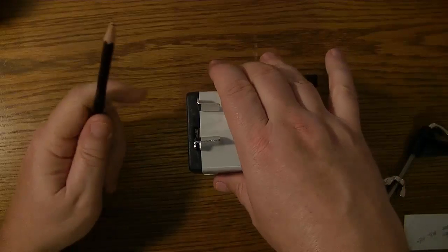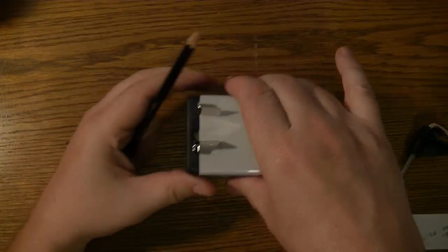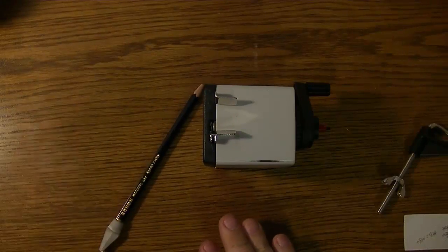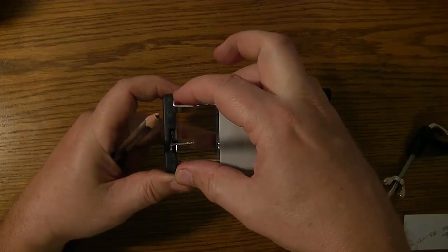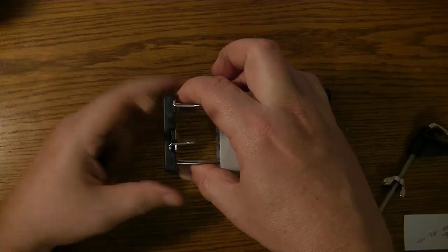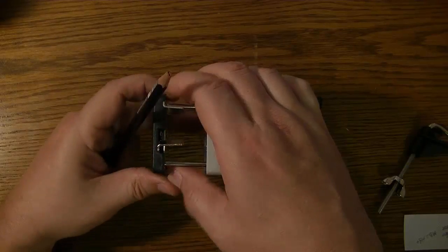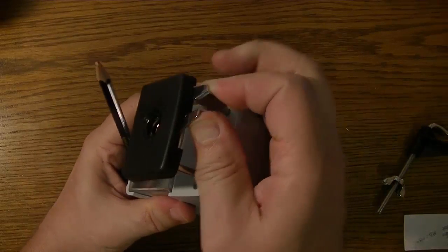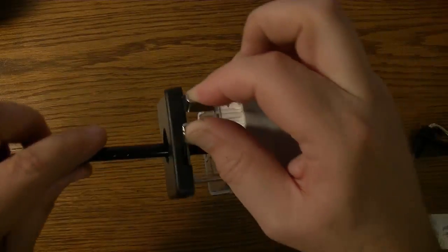So you pull that out. Now one thing I can tell already that I don't like - this is a personal preference thing - but you pull this out and you're going to have to put your fingers here to hold that from going in, and then you're going to have to open this. You're going to have to kind of open that clutch thing there so you can get the pencil in there.